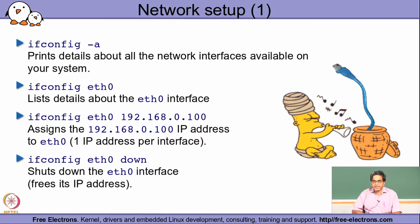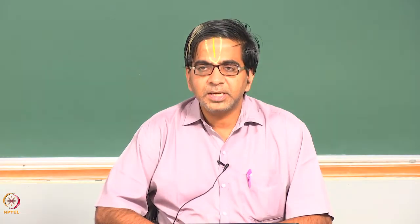For every port we need to basically set the IP address, configure the default gateway, specify the subnet mask, and then finally bring the interface up. What is referred to as a port is abstracted out as an interface from the Linux world, and you will find that all networking configuration commands always refer to something called an interface.